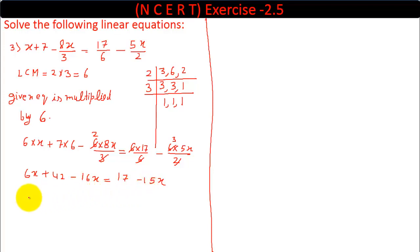Now like terms on one side on the left: 6x minus 16x plus 15x. Here minus on right side becomes plus on left side, giving 17. And this 42 we take to right side, where plus becomes minus, so minus 42.